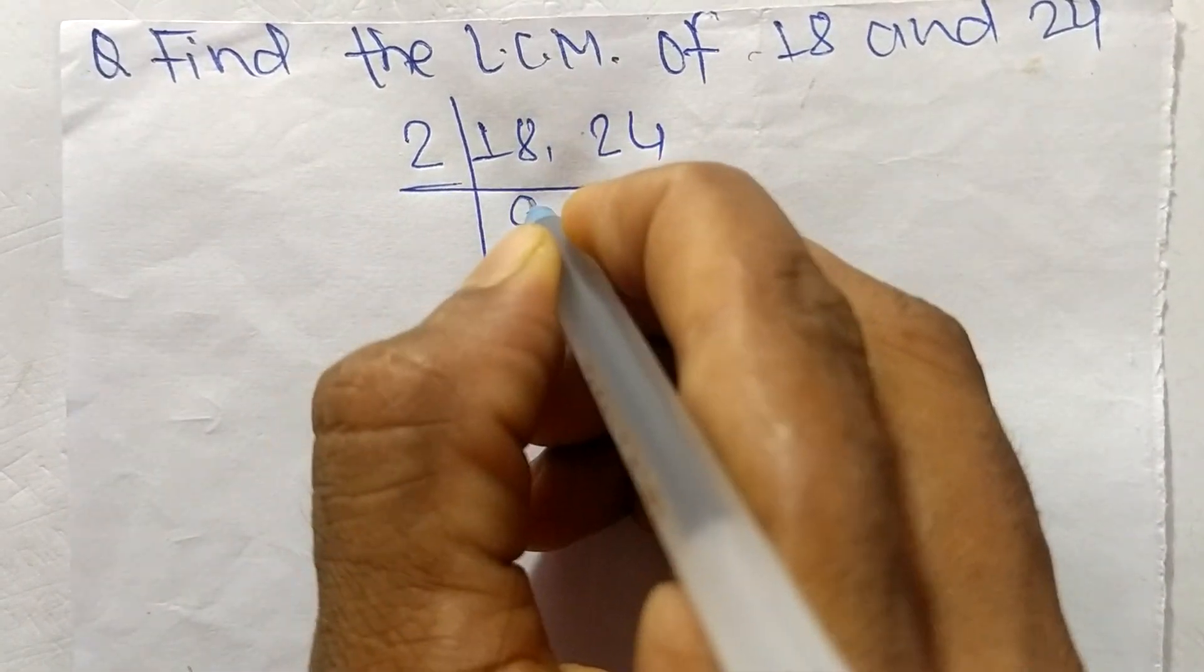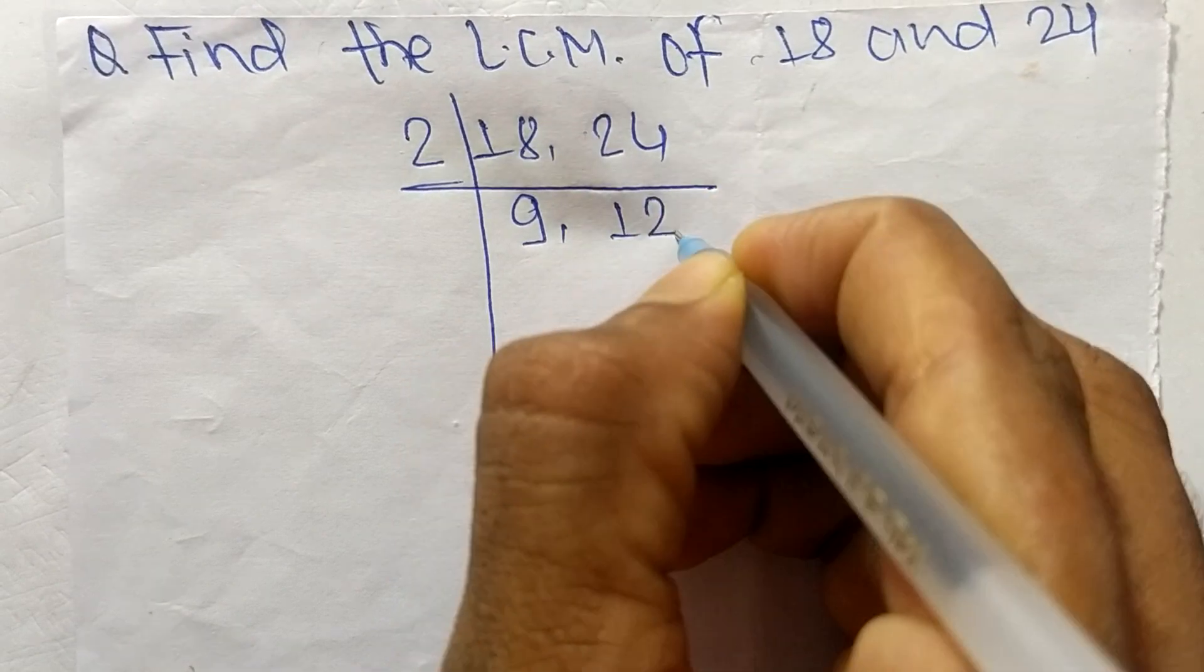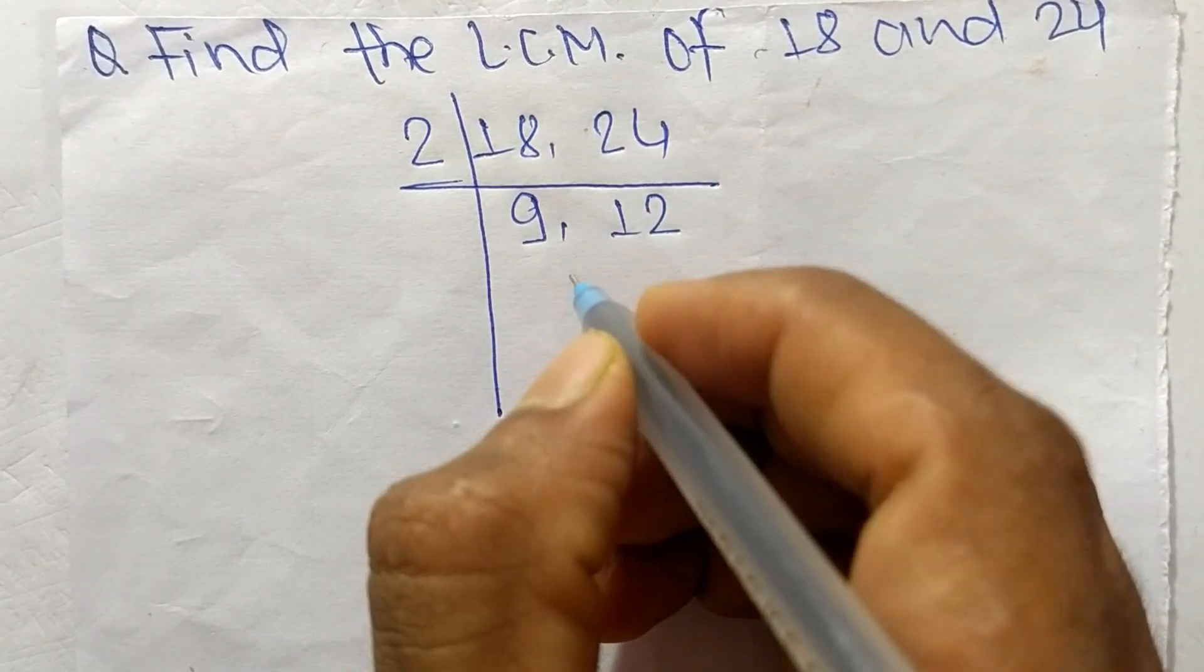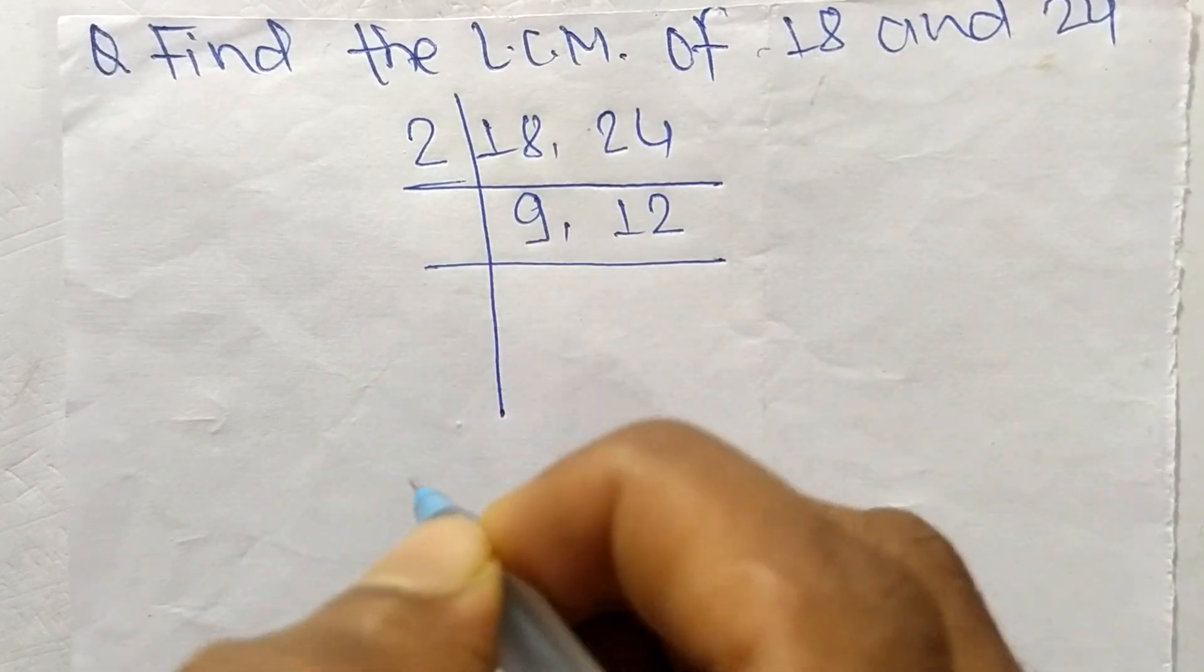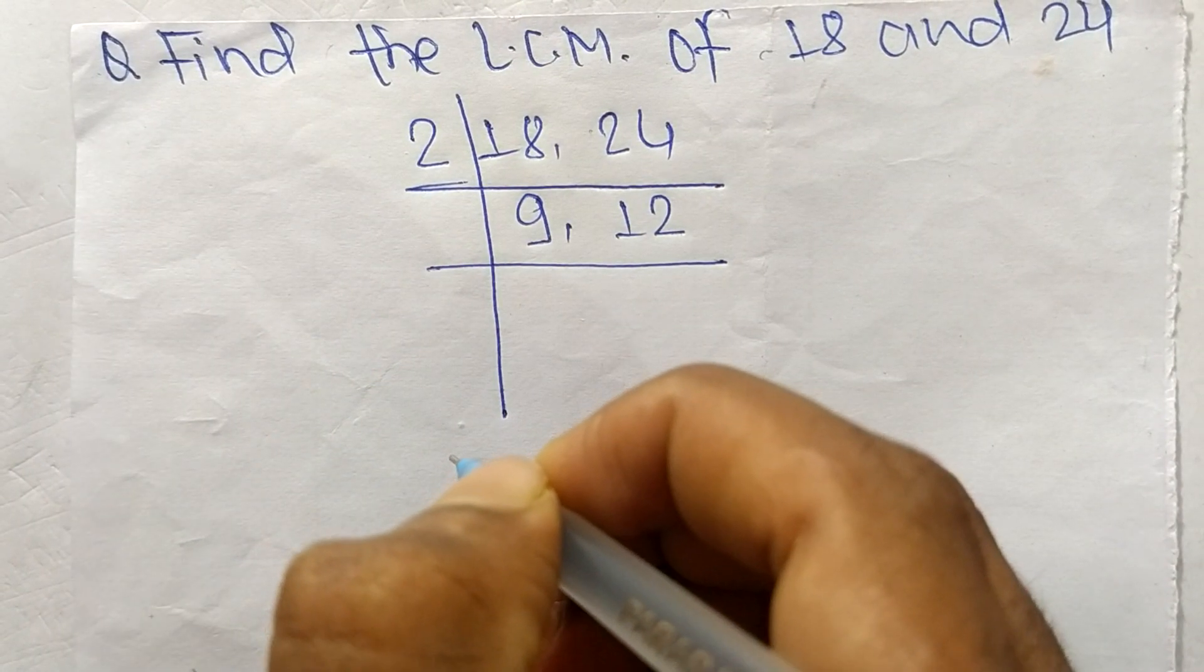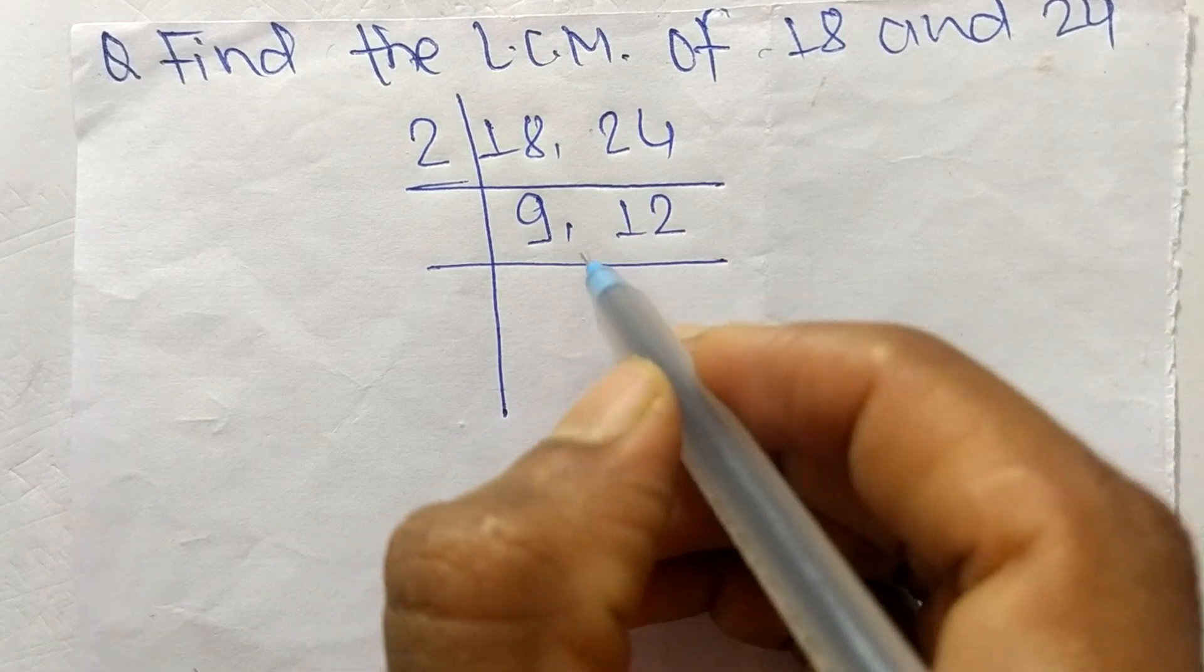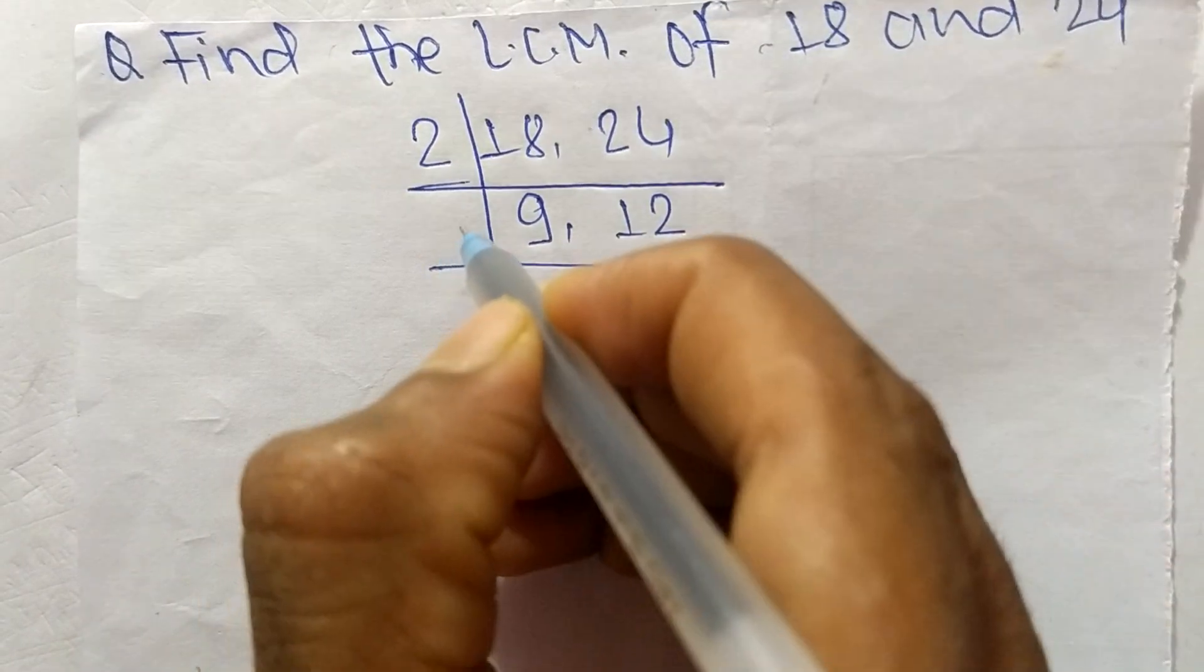2 times 9 means 18, 2 times 12 means it is 24. So now these both numbers are divisible by 2, so you have to choose the number greater than 2 that can exactly divide 9 and 12, so the number is 3.